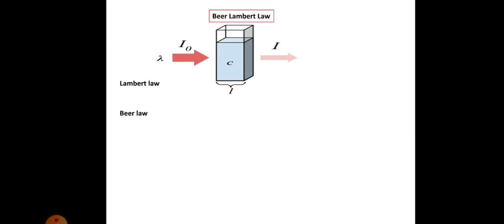Path length is usually the width of the cuvette in which the sample is taken. It is very obvious that when we pass monochromatic light into a colored solution, absorbance takes place in the visible region. The amount of radiation absorbed will increase with concentration, and the amount of light transmitted — that is, transmittance — will decrease with increasing concentration. Also, if path length increases, the intensity of radiation decreases and absorbance increases.